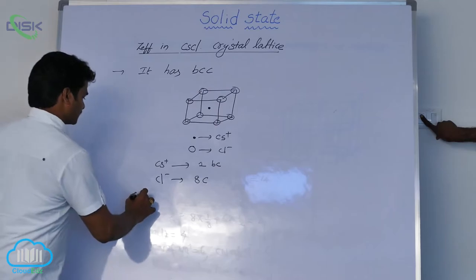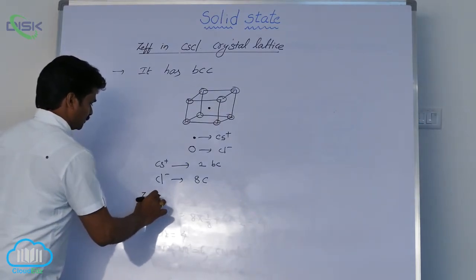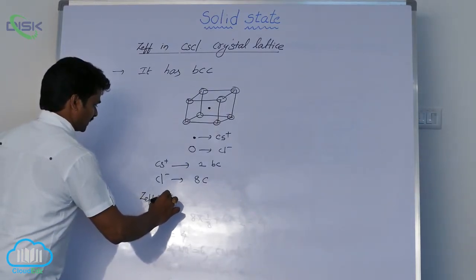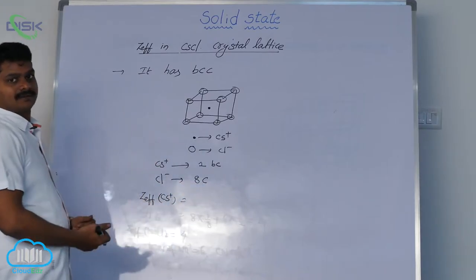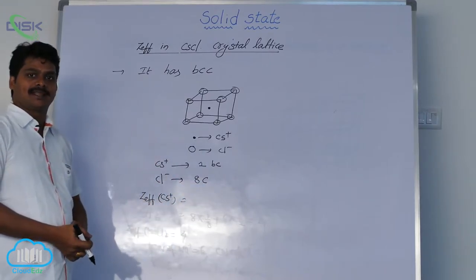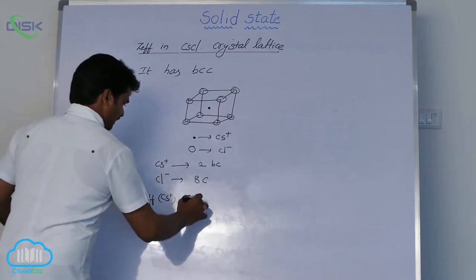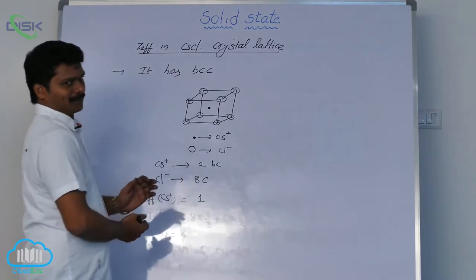Now let us calculate the effective number of ions for cesium. Cesium is present only at the body center, that is why one complete atom per unit cell.